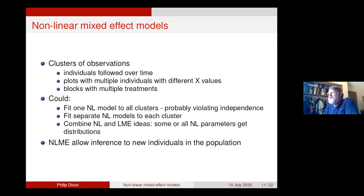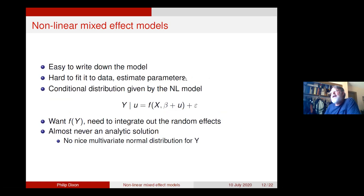Let's put those ideas together: nonlinear mixed effects models. We have clusters of observations. If we fit one nonlinear model to all three plots, we're probably violating the assumption of independent errors. We could fit separate nonlinear models to each cluster, or we can combine ideas: start with a nonlinear model and put a random distribution on some or all of the parameters. Like with sea turtles and beaches, that allows inference to new clusters in the population — which we can't do if we fit each one separately. It's easy to write down, but really hard to fit.